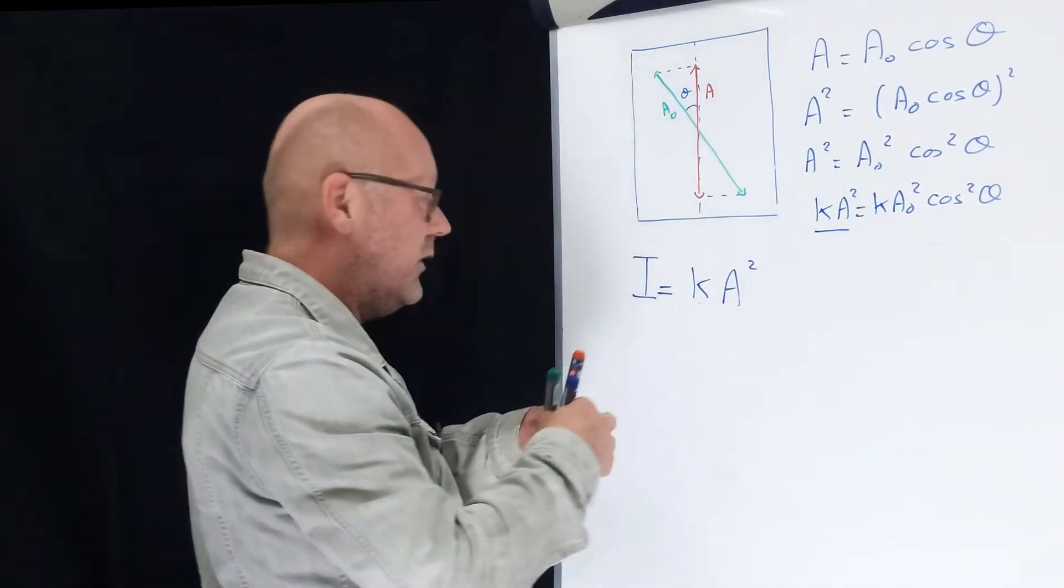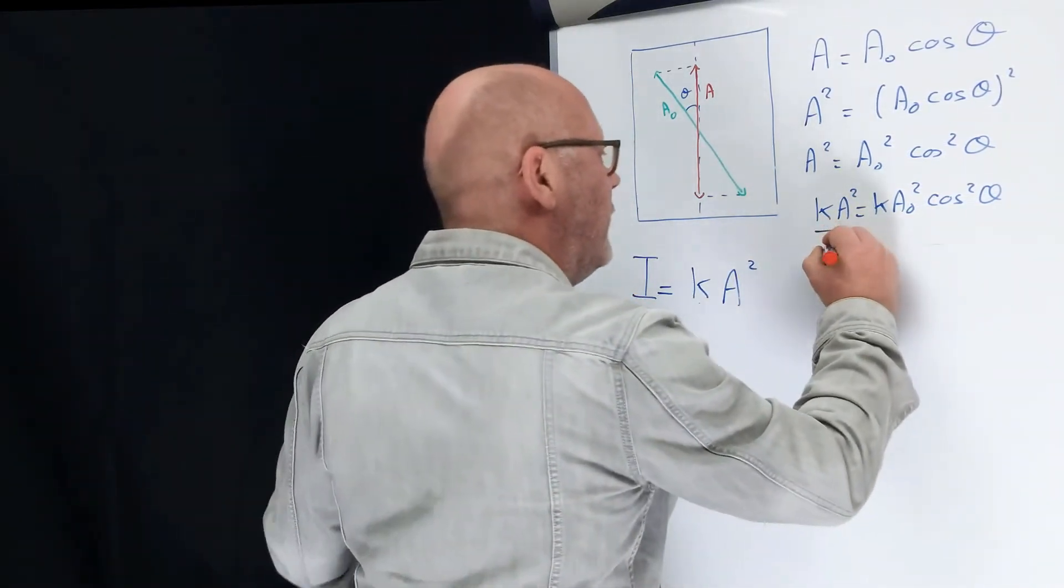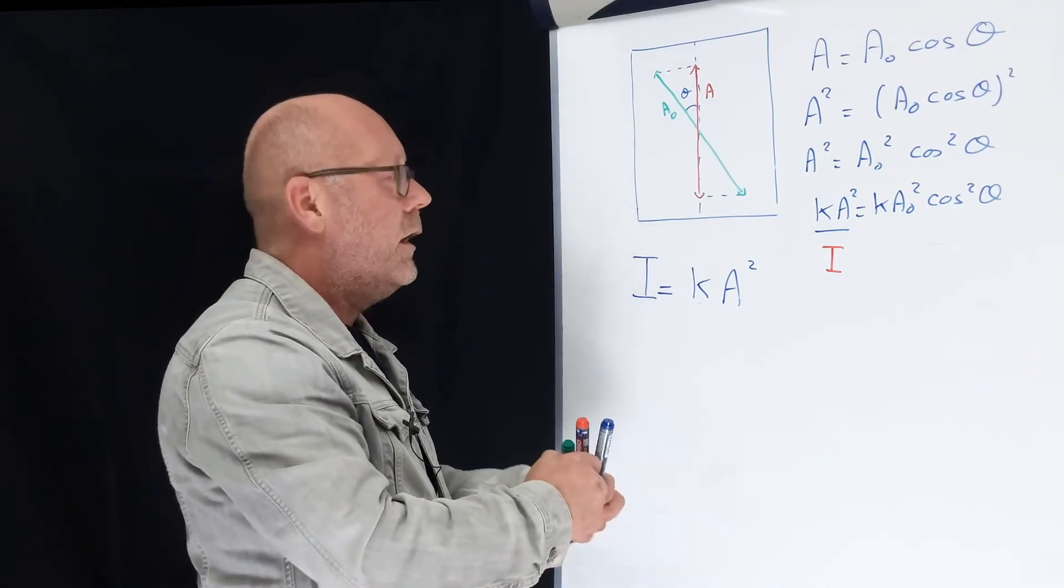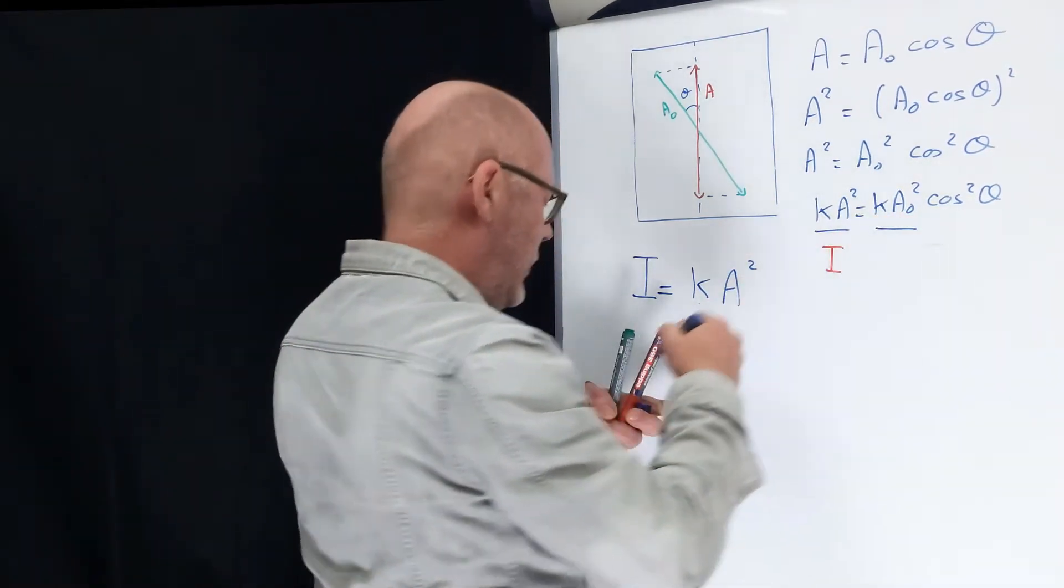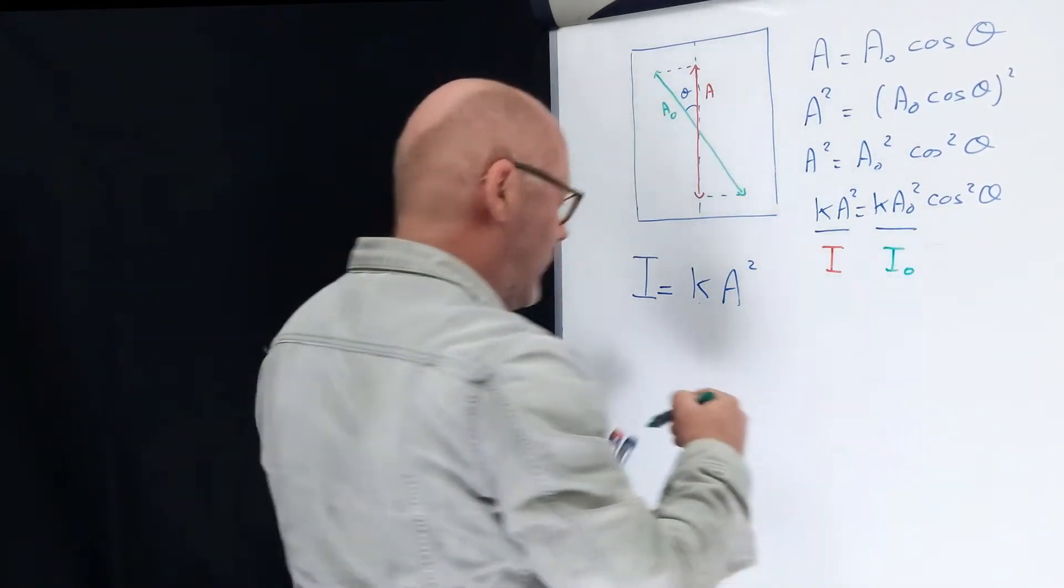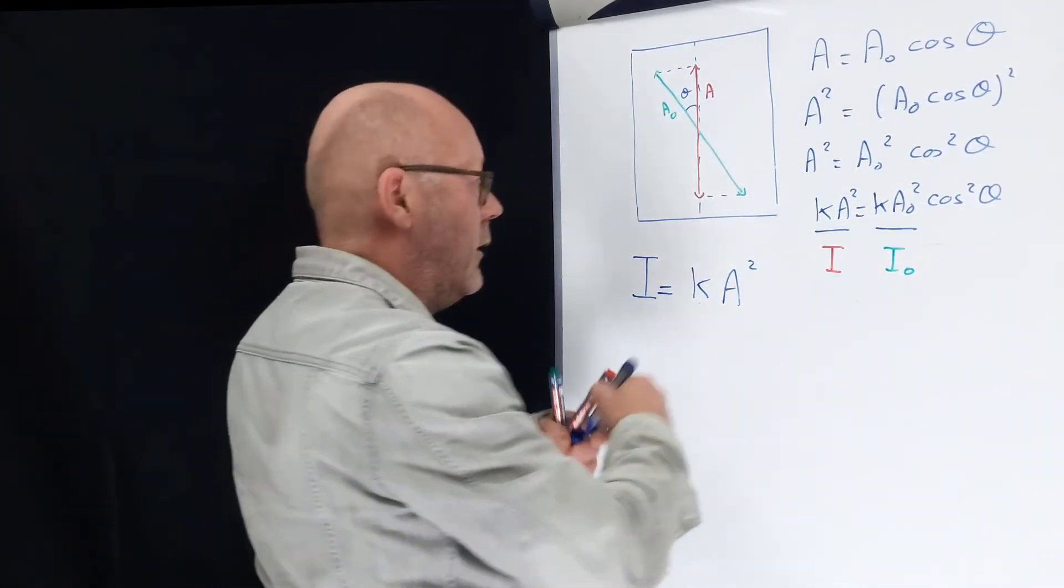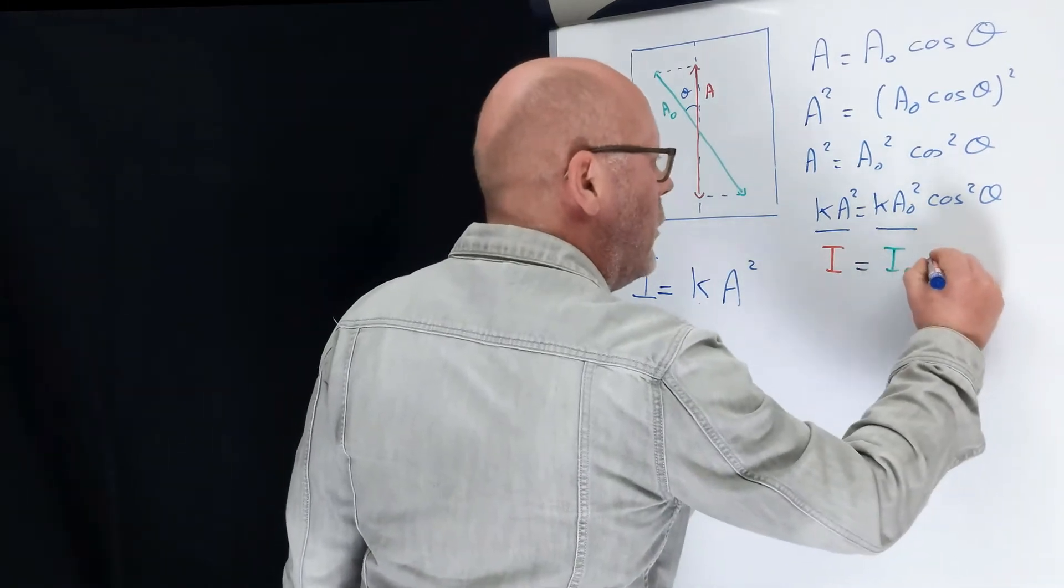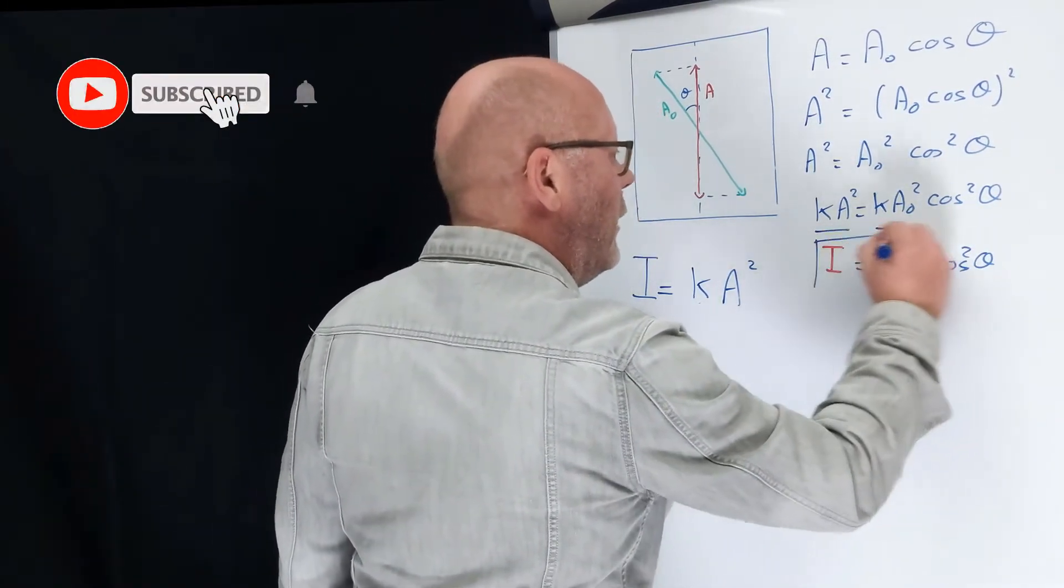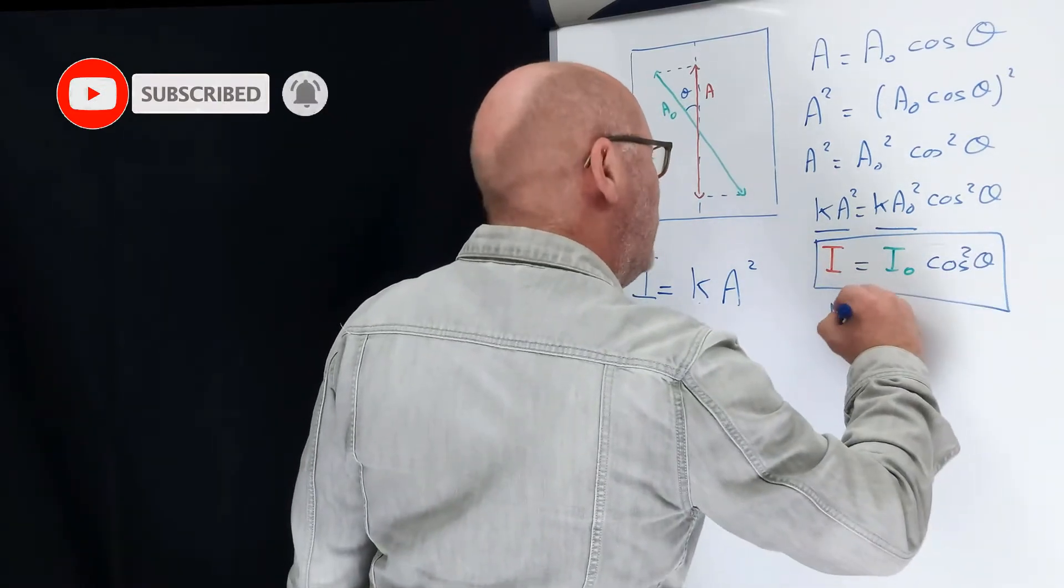And I'm pretty sure that you recognize the terms. Here, this is I, the intensity of the wave coming out of the polarizer. And this is I0, the intensity of the wave coming in the polarizer. Giving me I equals I0 cos squared of theta. This is called Malus's law.